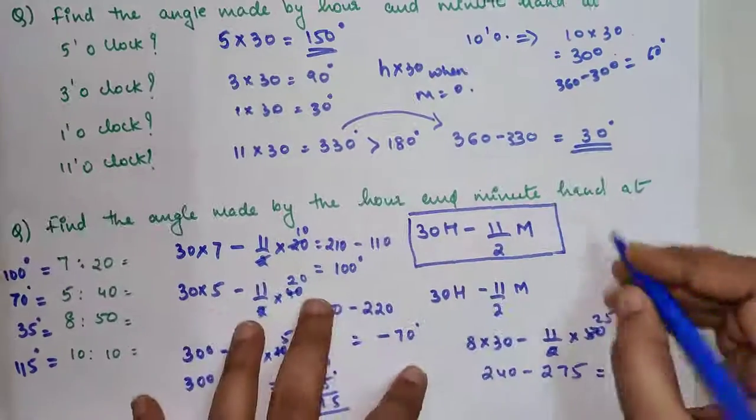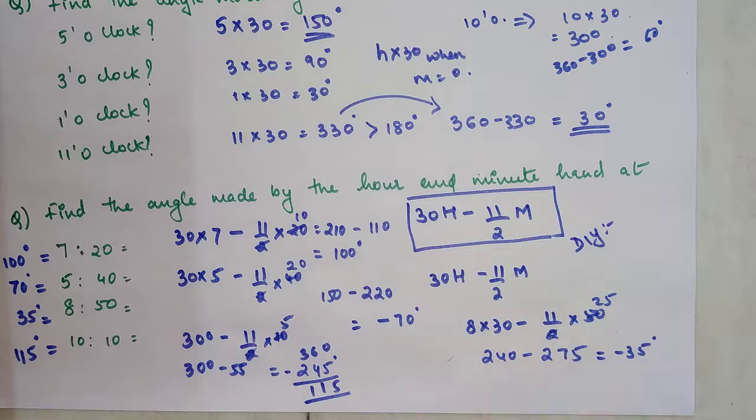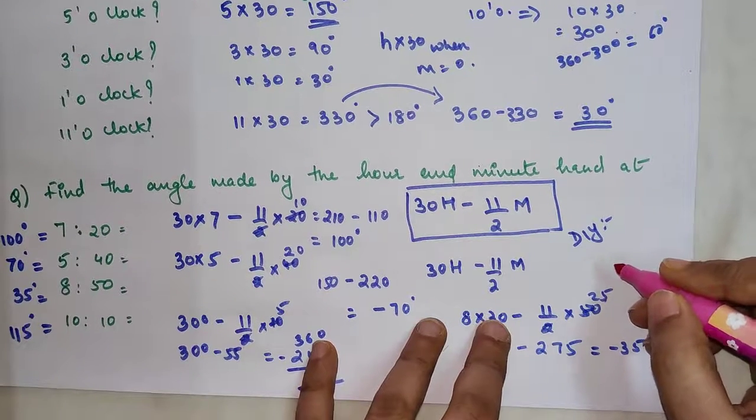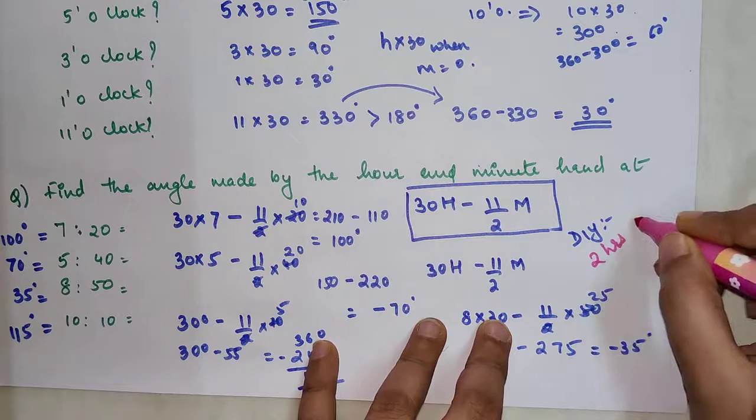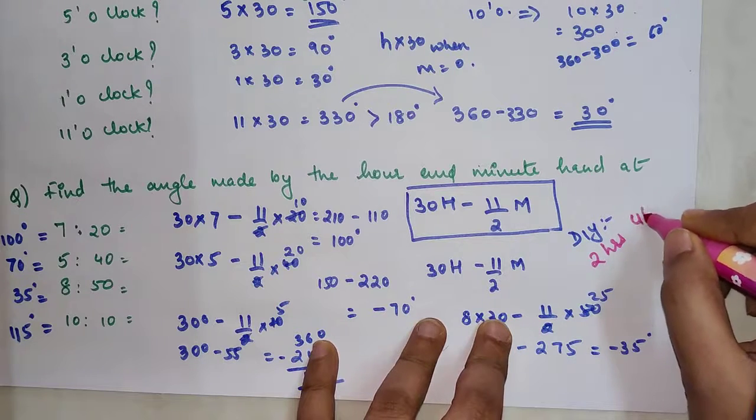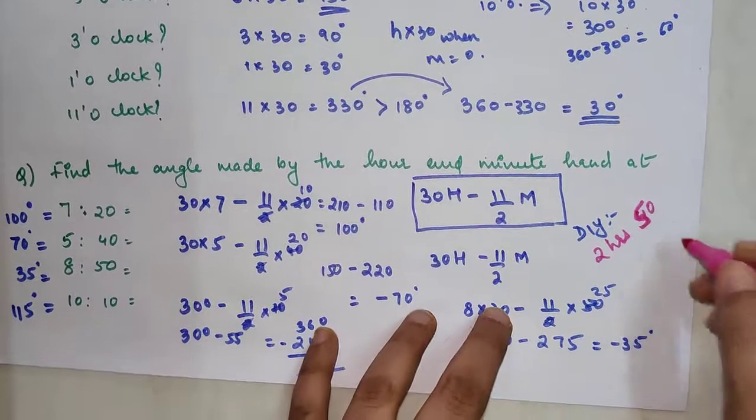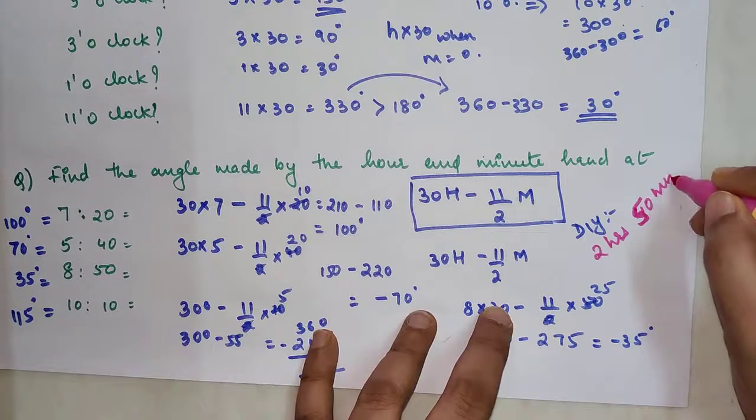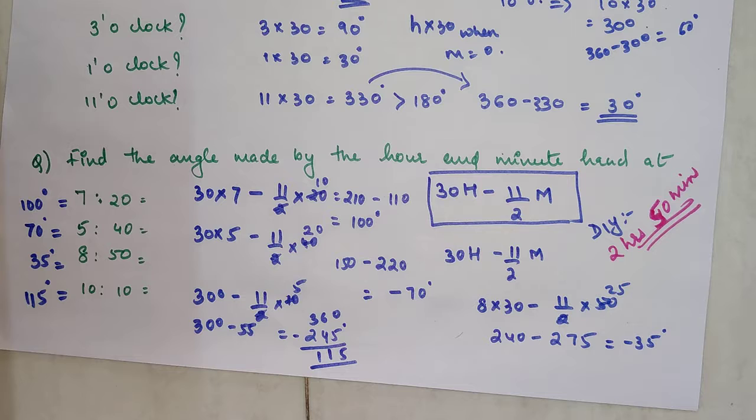So now coming to your DIY, I want you to tell me what should be 2 hours and 50 minutes. 2 hours and 50 minutes. What should be the angle? Do let me know your answers in the comment section. So that's it for today. I will see you in the next video.